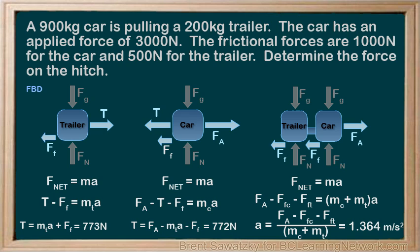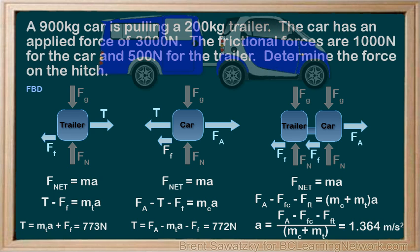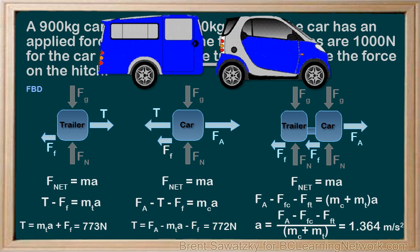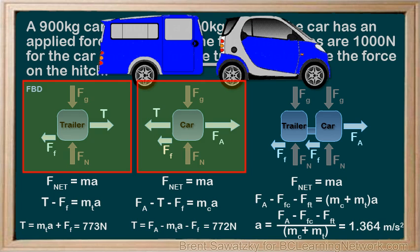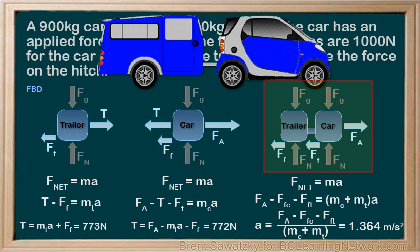In this tutorial, we considered a system of masses, connected and moving together. Our example was a car pulling a trailer. When facing a connected masses problem, recognize that there are three free body diagrams that can be considered. A free body diagram of either mass, of course, but also a free body diagram of the connected system.